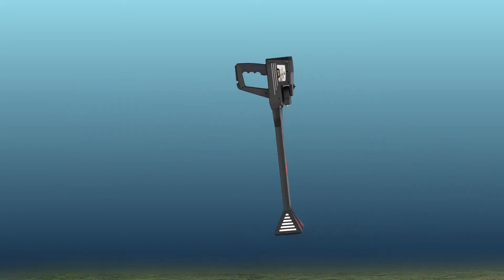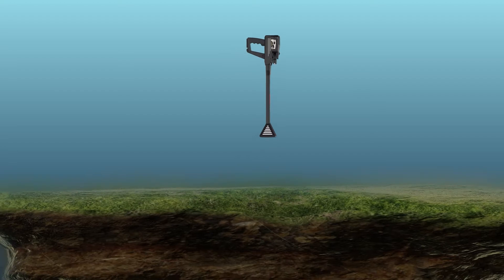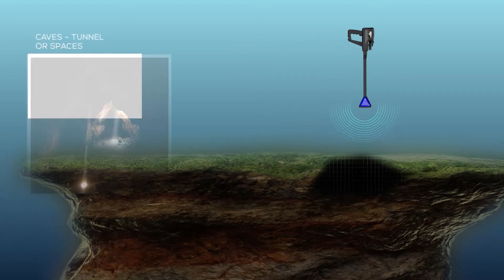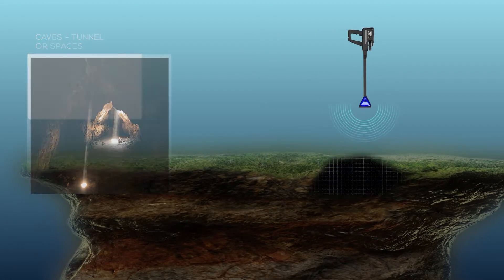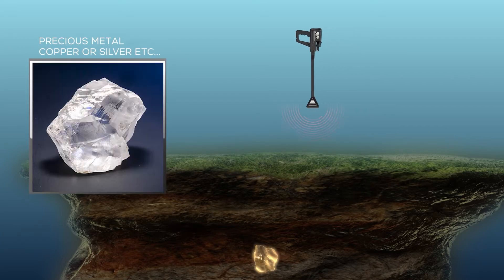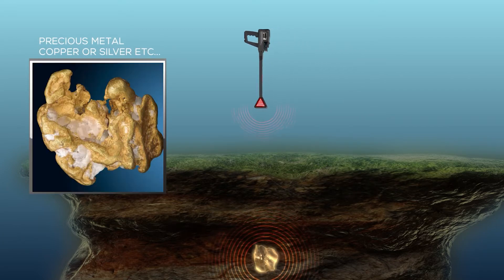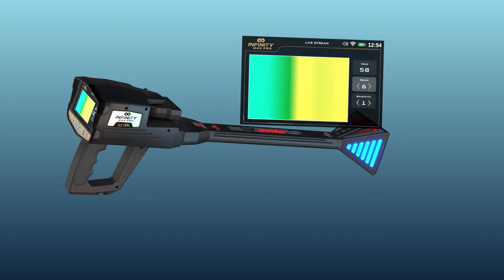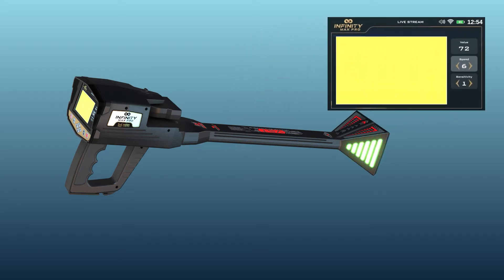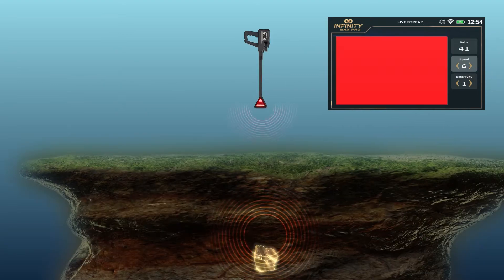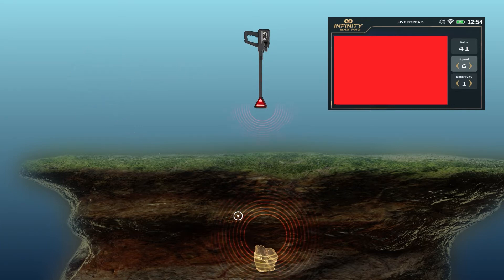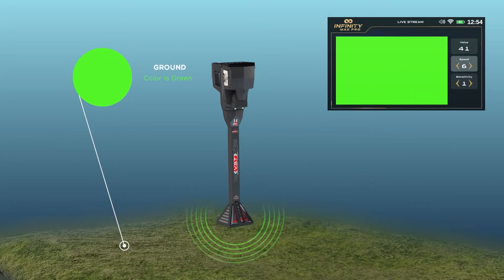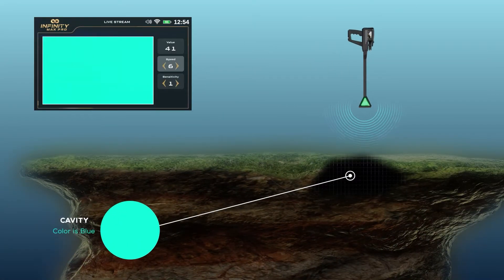For example, the LED lights will light up in blue when passing over a cavity or space such as a tunnel, and light up red when passing over a precious metal such as copper or silver. The signals captured by the VST probe are represented on the screen as a continuous color stream that changes colors according to the type of potential target: red for precious metal, green for the ground, and blue for cavity.